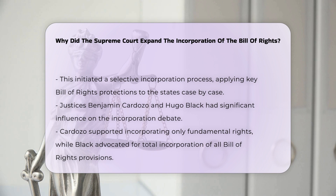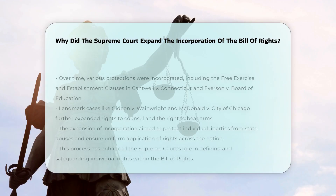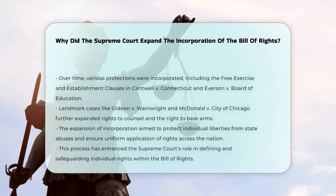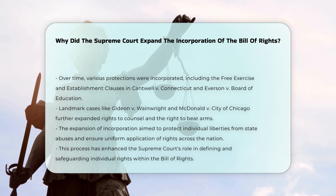Over the decades, the Supreme Court continued to incorporate various Bill of Rights protections into the 14th Amendment. For example, the First Amendment's free exercise and establishment clauses were incorporated in Cantwell v. Connecticut 1940 and Everson v. Board of Education 1947, respectively. Later cases, such as Gideon v. Wainwright 1963 and McDonald v. City of Chicago 2010, further expanded these protections to include the right to counsel and the right to bear arms.